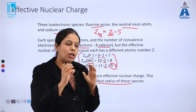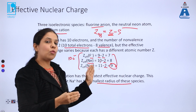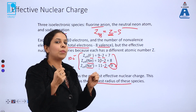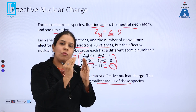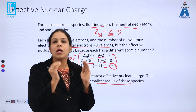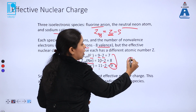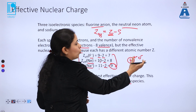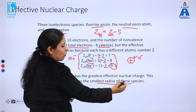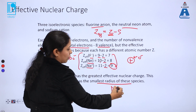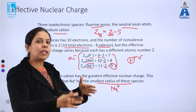Effective nuclear charge is the most important property defining atomic radius. Because sodium cation has the highest effective nuclear charge, the valence electrons feel that charge strongly and the protons attract those electrons closer to the nucleus, decreasing the radius. So the smallest radius among these isoelectronic species belongs to sodium cation. You can calculate effective nuclear charge using this formula and from it define other periodic properties as well.